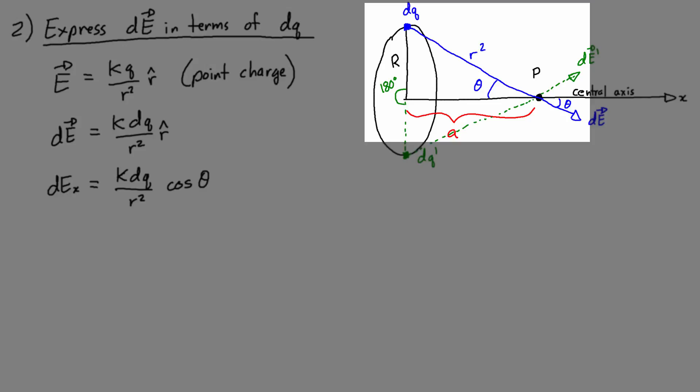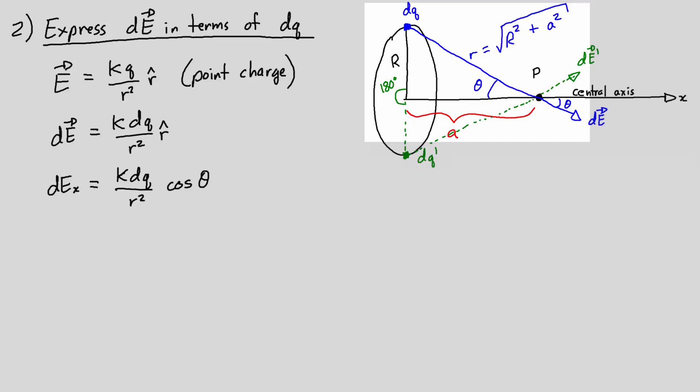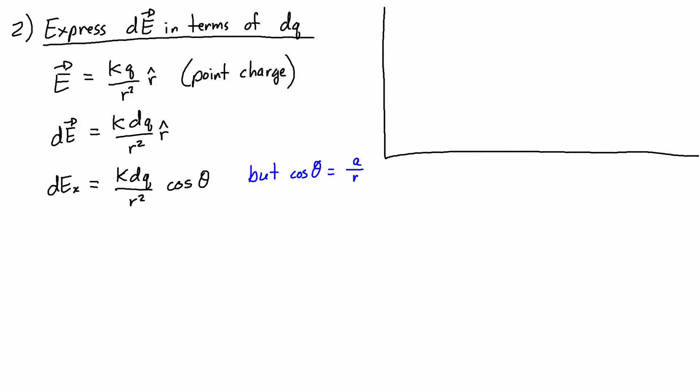Also note that r, the distance r, is the square root of capital R, which is the radius of the disk, squared, plus distance a squared. So to get the x component of dE, I just multiply the total dE times cosine of theta. But notice that cos theta is equal to the adjacent over hypotenuse, where the adjacent side is small a, and the hypotenuse has length r. So cos of theta is equal to a over r, and that means I can substitute in a over r.